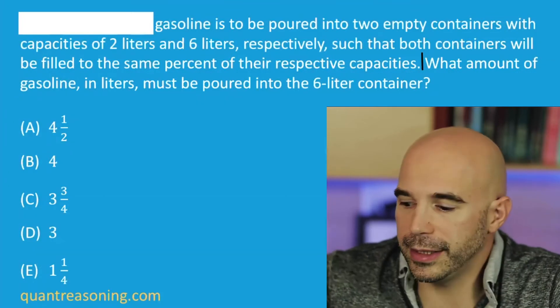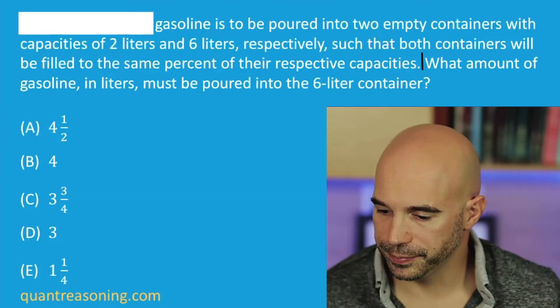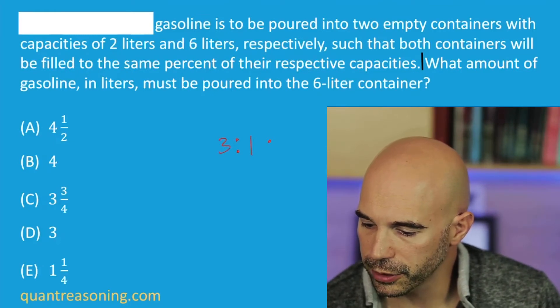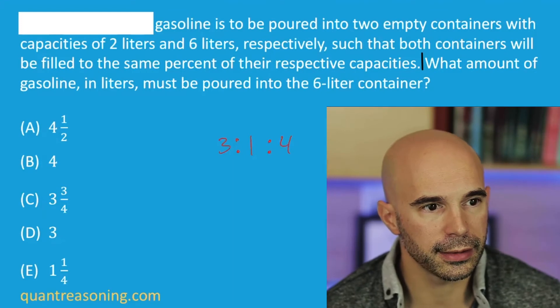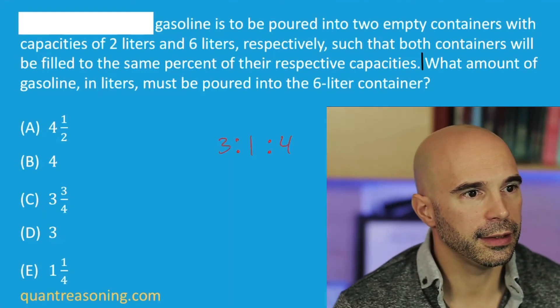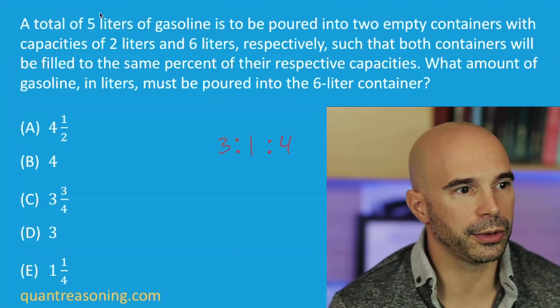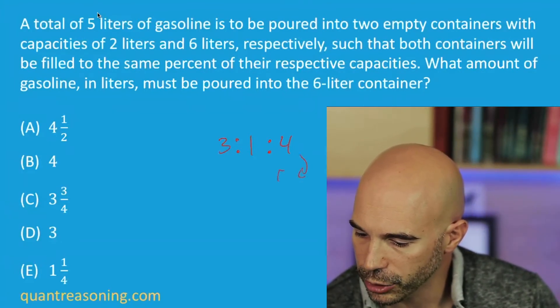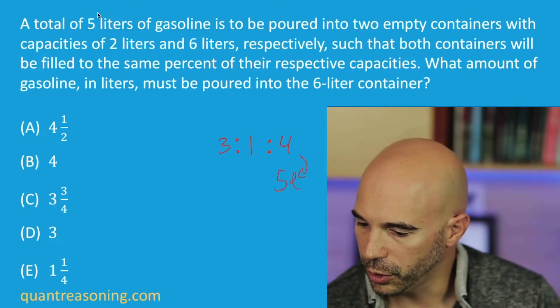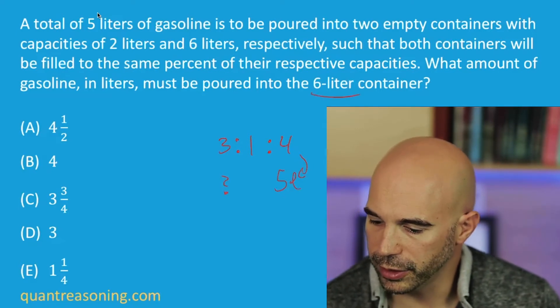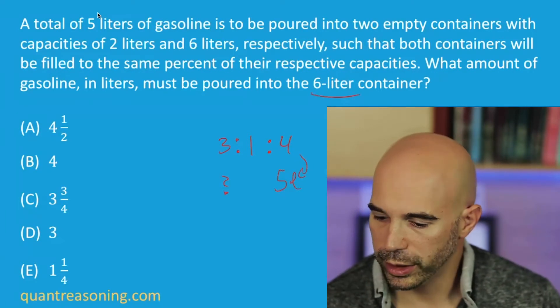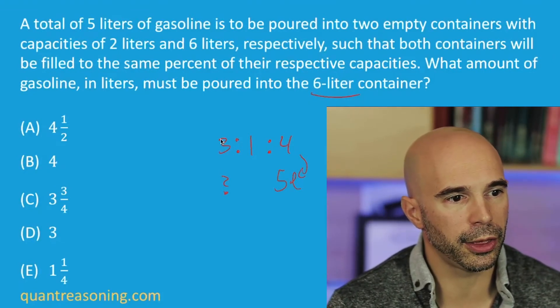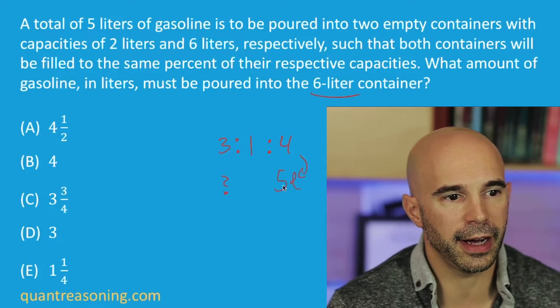So the amount of gasoline that would go into them would have to be in a ratio of three to one for a total of four ratio units. And now I can reveal the first few words. We know that the total is five liters. So the four ratio units represent an actual quantity of five liters. And the question is asking for this quantity. So the question mark, just looking at my ratio horizontally, should be three-fourths of five liters.